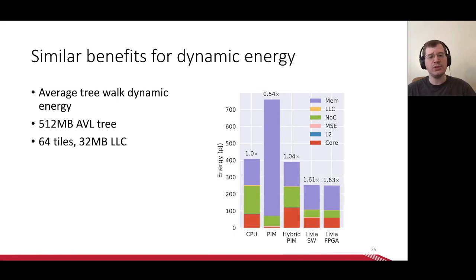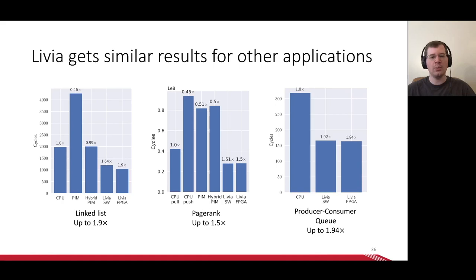If we switch to dynamic energy, we can see a similar gain. Note that the reduction of network energy is even greater than network latency. This is because while latency is only affected by operations on the critical path, energy is also affected by other operations, primarily evictions, which Livia reduces by avoiding cache pollution.